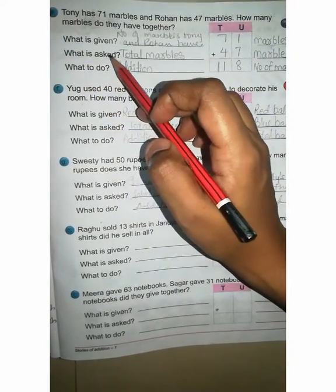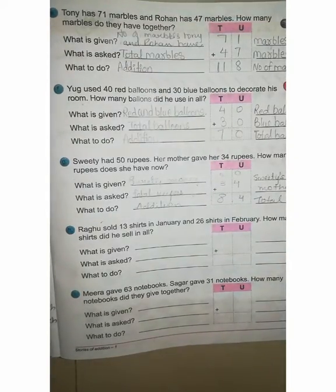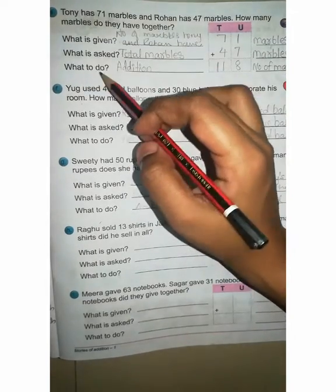What is asked? In this question what is asked? Total marbles. Right here, total marbles. What to do? Now in this question what to do? You are given together. Together means addition. Right here, addition.